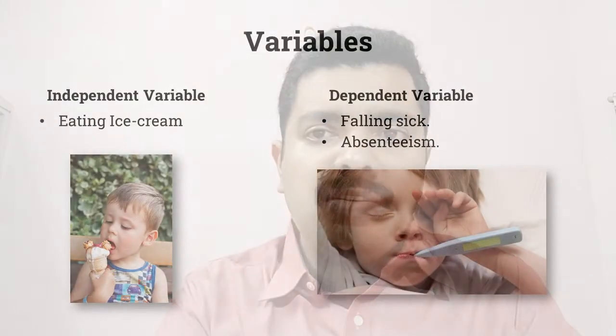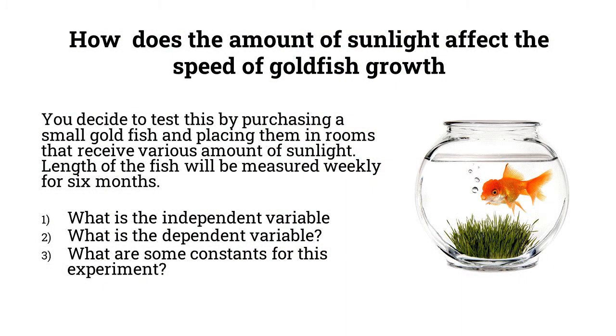Now let's take a more detailed example related to a goldfish and its speed of growth. The statement is: how does the amount of sunlight affect the speed of goldfish growth? To test this, you purchase a small goldfish, place it in a glass bowl, and put it in rooms that receive various amounts of sunlight. The length of the fish will be measured weekly for six months. Now the three questions are: what is the independent variable, the dependent variable, and what are the constants for this experiment?